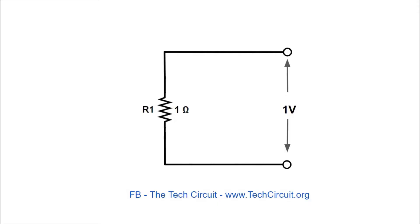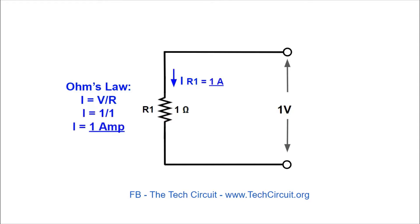Let's take a 1 ohm resistor and put 1 volt across it. Ohm's law says that the current through the resistor is 1 volt divided by 1 ohm, or 1 amp. The total circuit current, since there is only one branch, is also 1 amp.